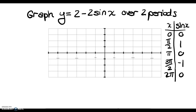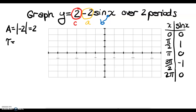Let's locate our values. The vertical shift is out in front, the a value is negative 2 (remembering we have sine here), and b is 1, the coefficient in front of x. The amplitude is the absolute value of a, which is 2. The period is 2π over b equals 2π, which remains unchanged. The vertical shift is positive 2, so I mark a dashed line at y equals 2.